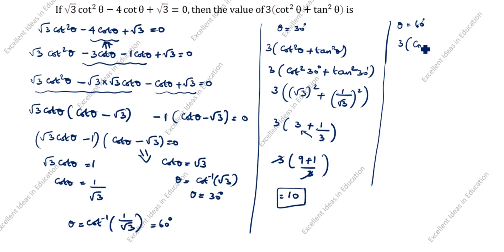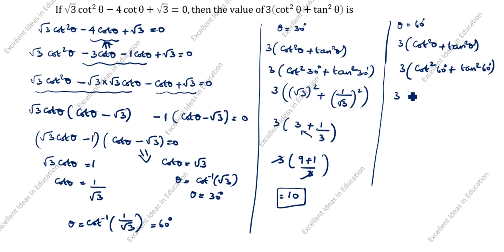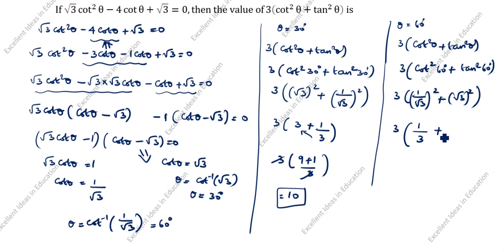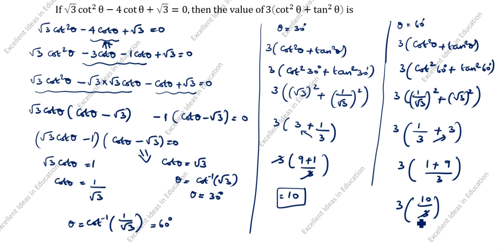Next we will do this with theta equal to 60 degrees. 3 open the bracket cot squared theta plus tan squared theta. Cot 60 is 1 by root 3, so 1 by root 3 times 1 by root 3 is 1 by 3. Tan 60 is root 3, so root 3 times root 3 is 3. So 3 open the bracket 1 by 3 plus 3. That gives 1 plus 9 divided by 3. Cancel 3: equals 10.